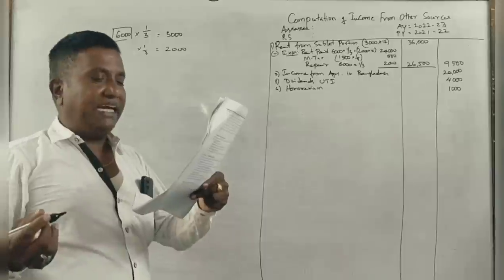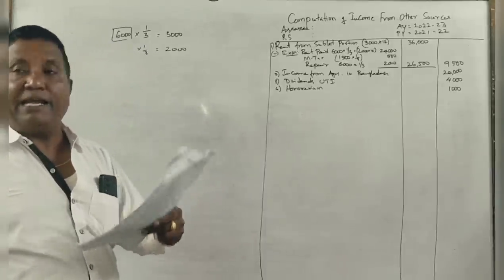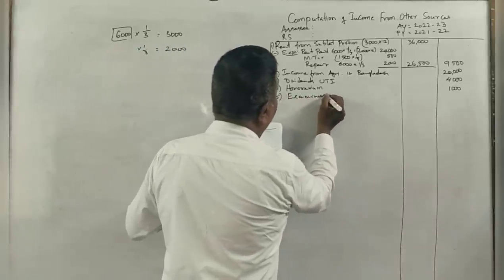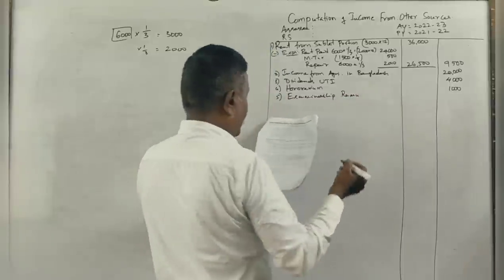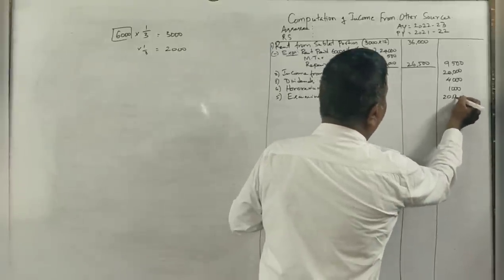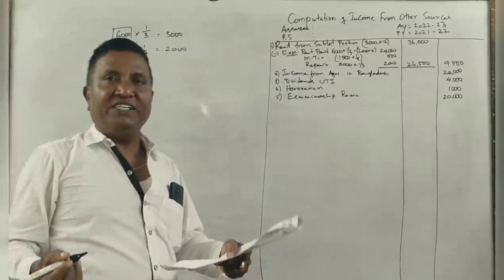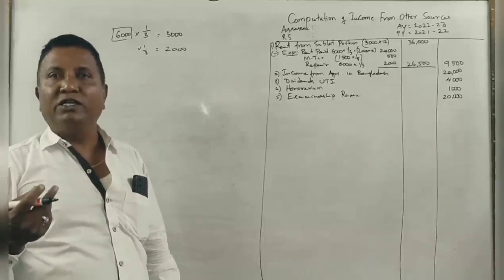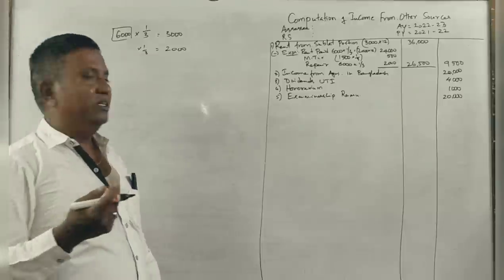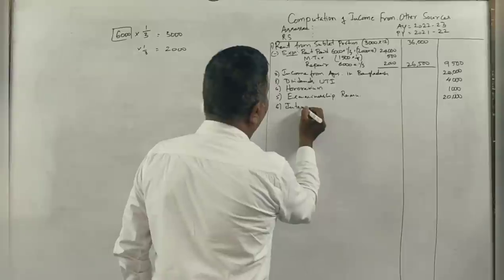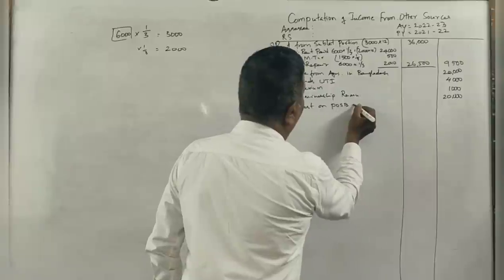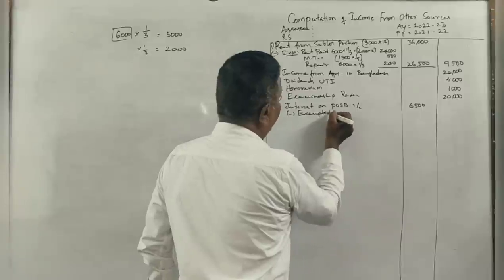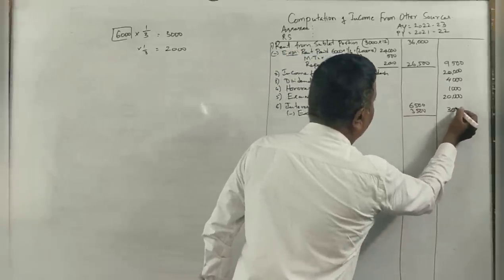He is an examiner of a university and received 20,000 as examination remuneration, taxable under income from other sources. Interest on post office savings bank account: individual exemption is 3,500, so 6,500 minus 3,500 exempted, rest 3,000 is taxable.